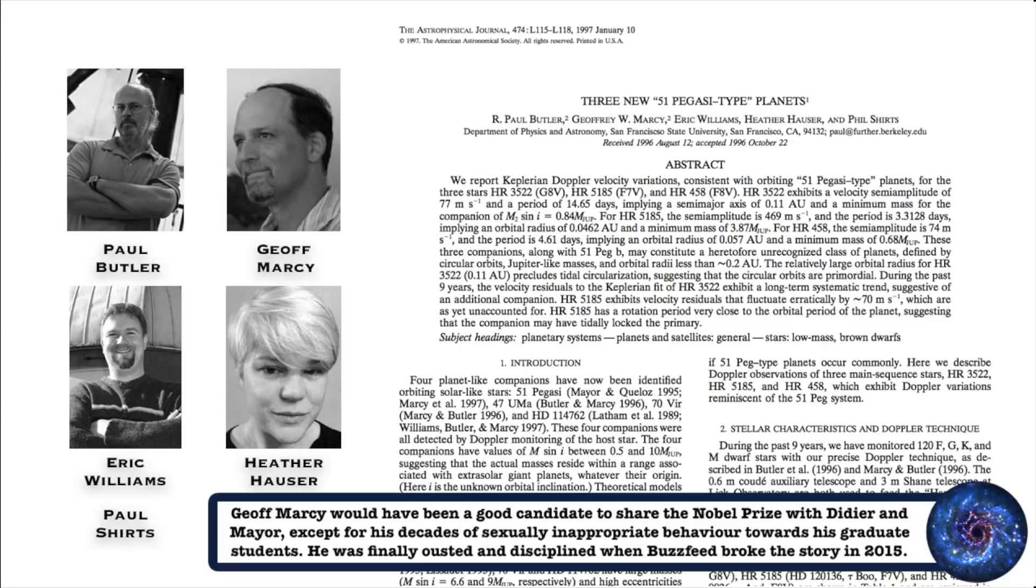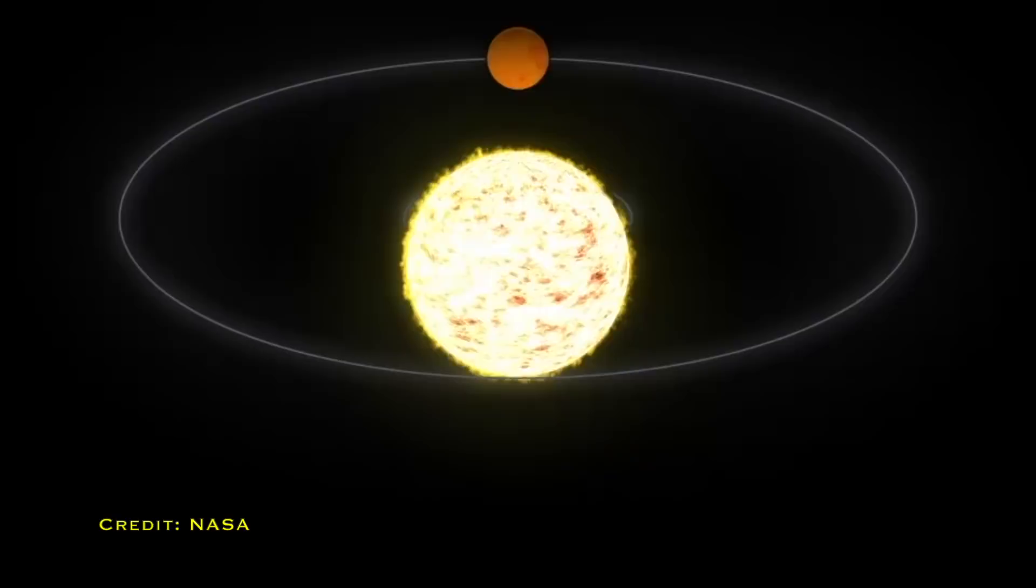But after this momentous discovery by Didier and Mayor, the floodgates really did open on the field of exoplanets. In particular, Butler, Marcy, Williams, Hauser and Schertz found a planet around Upsilon Andromeda in 1997.